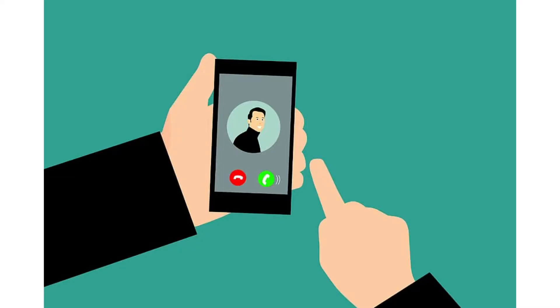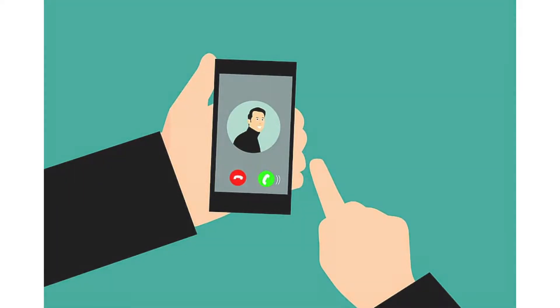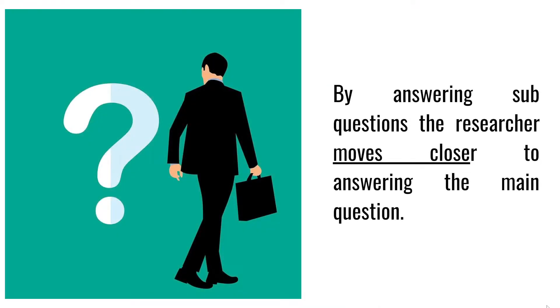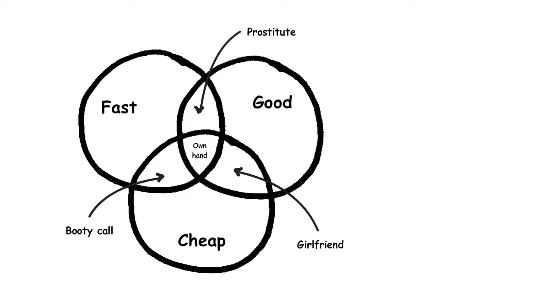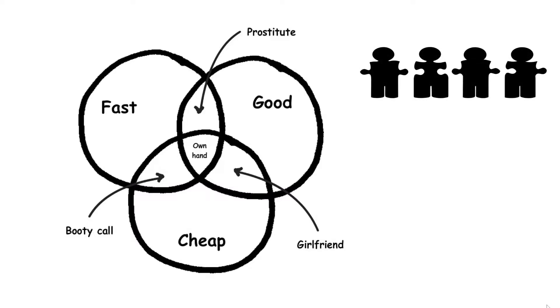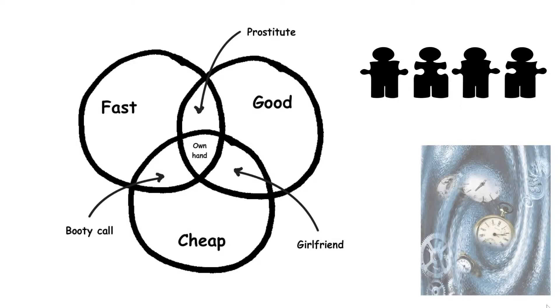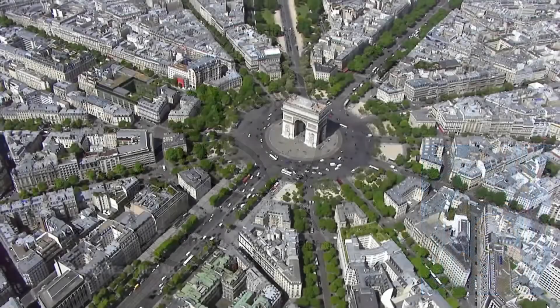By answering sub-questions, the researcher moves closer to answering the main question. The answers to all the sub-questions together answer the main question. The objectives of the same research problem may vary from person to person, from time to time, and from place to place.